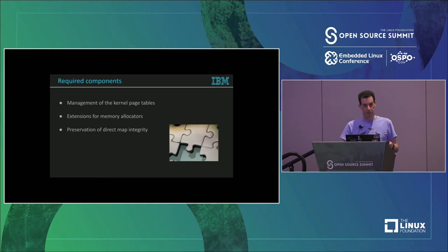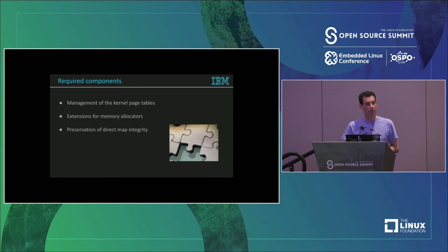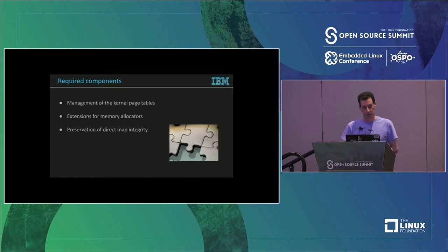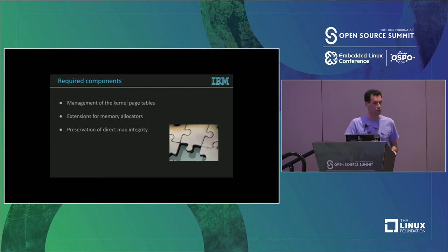There is still a gap between where we are now and where we need to get. First, we need to add more mechanisms for management of kernel page tables. We need to provide a way for kernel services running inside the isolated namespace to allocate memory on behalf of that namespace and make this memory isolated from the rest of the system. Since we are touching the direct map, we need to preserve its integrity so that system performance won't be degraded by our manipulations on the direct map.